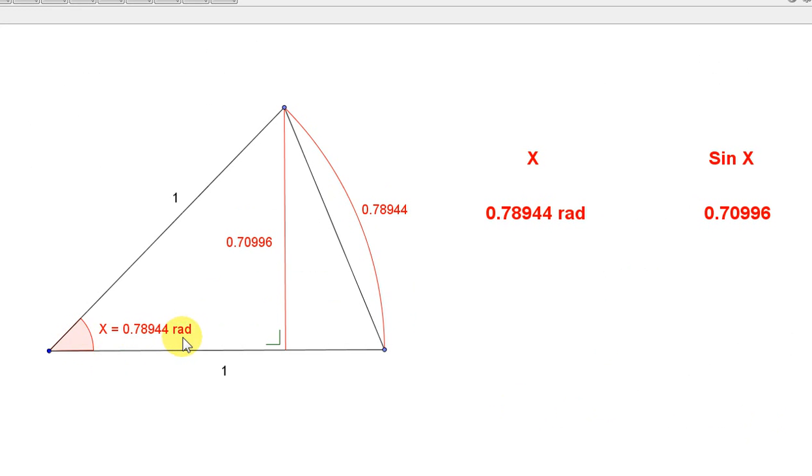Now, here x is 0.78944 radians. This is about 45 degrees. This would be pi over 4 radians. There is the arc. It is the same as 0.78944. Here is the sin. So, there is a bit of a discrepancy.